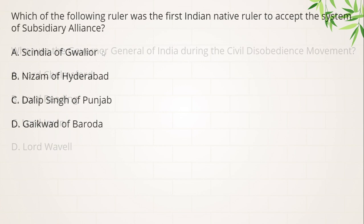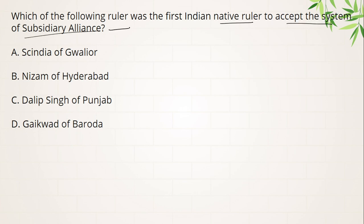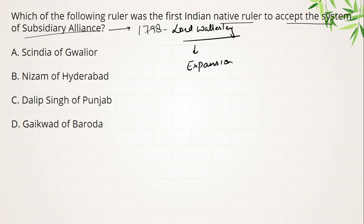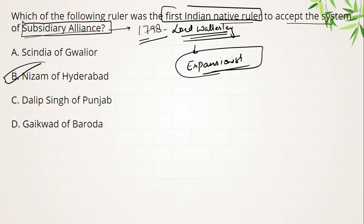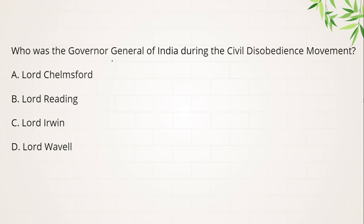Next — which of the following ruler was the first Indian native ruler to accept the system of Subsidiary Alliance? Dhyan rakhein, Subsidiary Alliance ka concept 1798 mein Lord Wellesley lekar aaye the — yeh British expansionist policy ka ek saboot hai. Jab Subsidiary Alliance 1798 mein Lord Wellesley ke dwara start ki gayi, to pehla Indian ruler jo tha usne ise accept kiya — remember, the right answer is the Nizam of Hyderabad. He was the first person to accept Subsidiary Alliance.